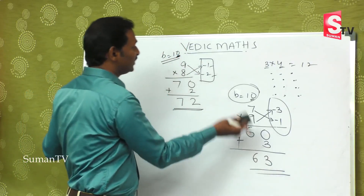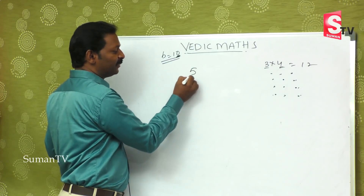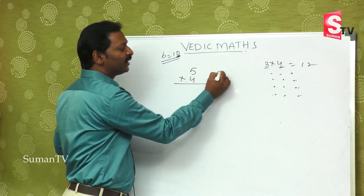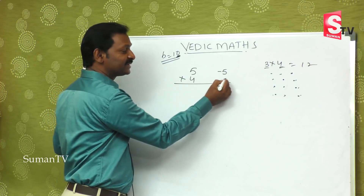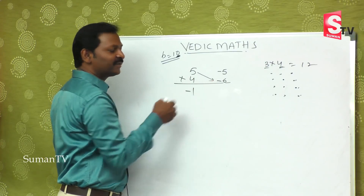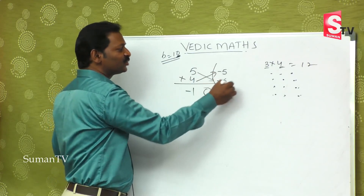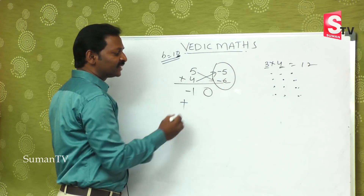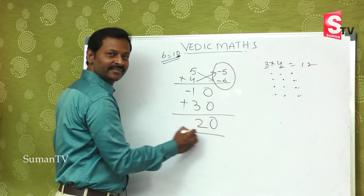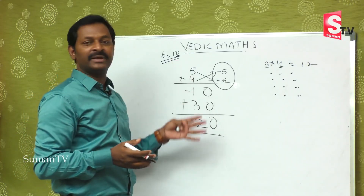Suppose five is multiplied by four. We take base ten. Five is less than ten by five, so write minus five. Four is less than ten by six, so write minus six. Five minus six gives minus one, and four minus five gives minus one too. The second place indicator is zero. Minus into minus is plus, six fives are thirty. But thirty minus ten gives twenty, which is the answer our ancestors gave us through this methodology. This method is useful for small numbers as well as big numbers.